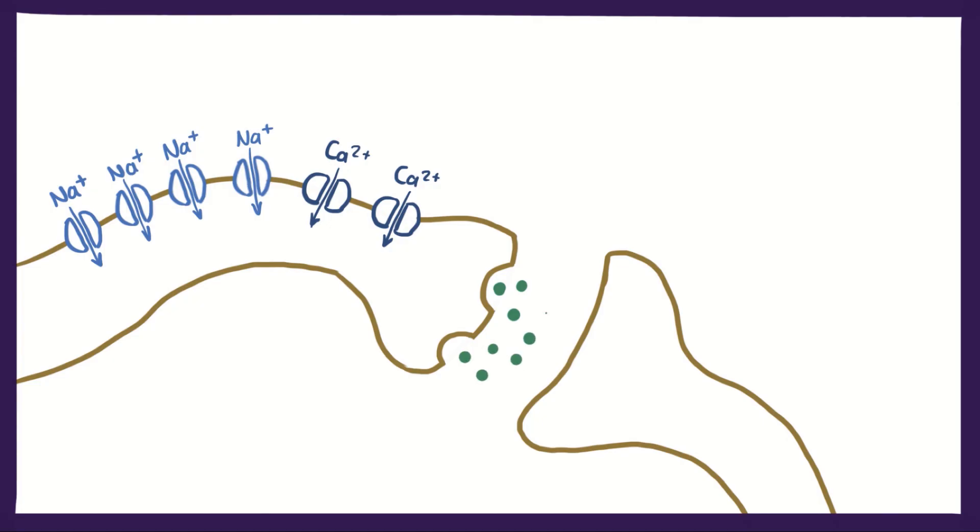The way this ion flow is controlled is through neurotransmitters, a type of signaling molecule, and receptors.